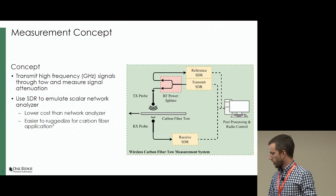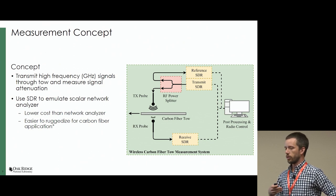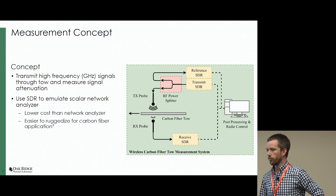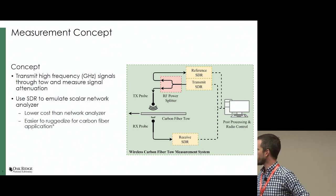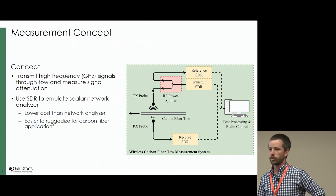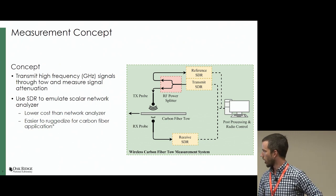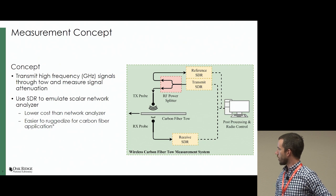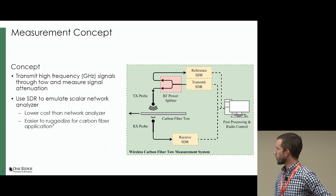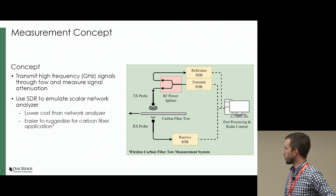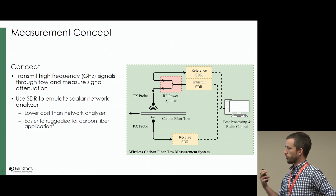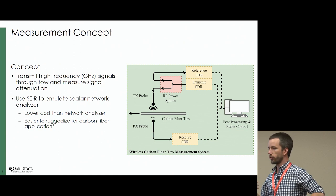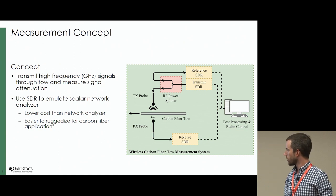This is the measurement concept. Back when the project started, they were asking: can we send gigahertz frequencies through the toe and measure attenuation? And does that attenuation correlate to any mechanical properties? The proposed system uses a transmit and a reference software radio with a power splitter to split the signal — half the power goes back to the reference, half goes through the device under test, which is the carbon fiber, and we measure the attenuation on a receiver. The general concept is to emulate a scalar network analyzer as a prototype to see if we get anything worth looking at.